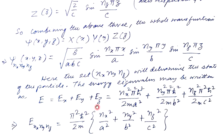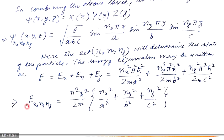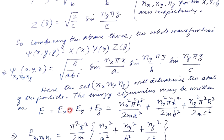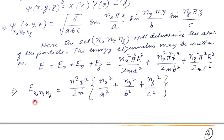Now let us find the energy values. We have E = Ex + Ey + Ez. From the one-dimensional case, Ex = nx²π²h-cross²/(2mA²), and similarly Ey = ny²π²h-cross²/(2mB²), and Ez = nz²π²h-cross²/(2mC²). Combining all three gives the full energy eigenvalue for the particle confined inside the three-dimensional potential box.